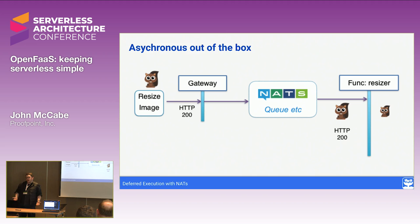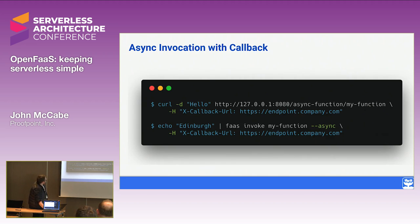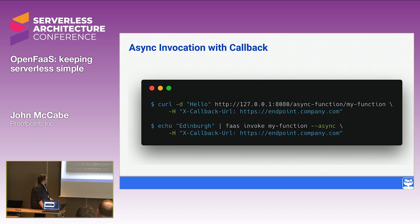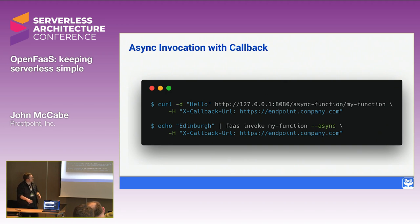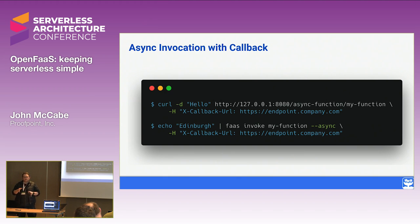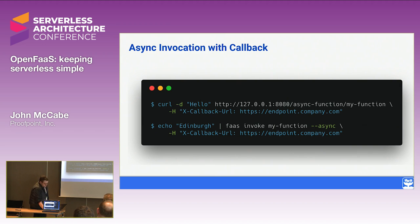It's asynchronous out of the box - you don't have to do anything extra. The only difference for an async function is instead of the function name path, you use 'async-' and provide a callback header, and your function is now asynchronous. This is popular for people running heavy workloads or machine learning applications where things can take quite a while. A lot of people started using OpenFaaS because Lambda's limits were too small - it's up to 15 minutes now, but it used to be much less. With OpenFaaS, they can run functions for 30, 40, or 50 minutes - whatever they need.